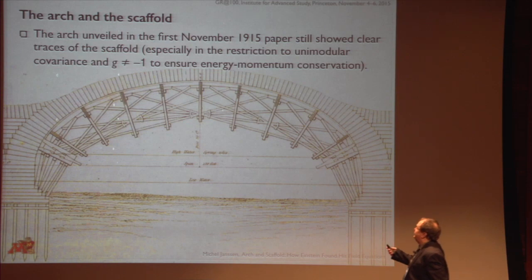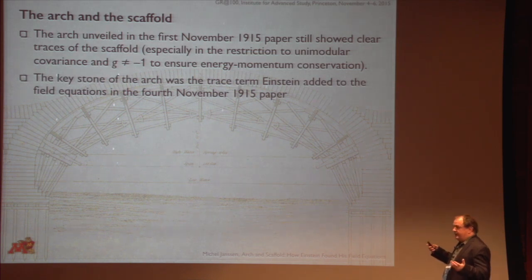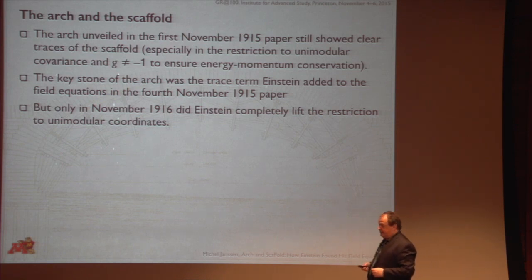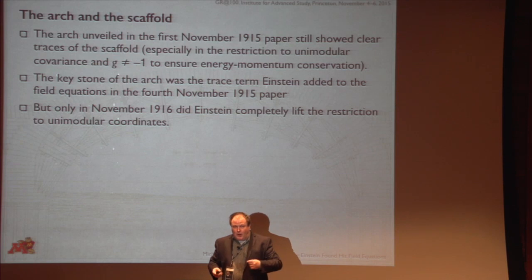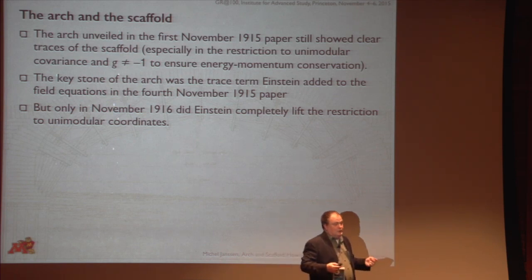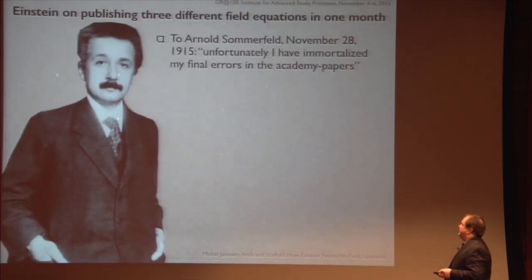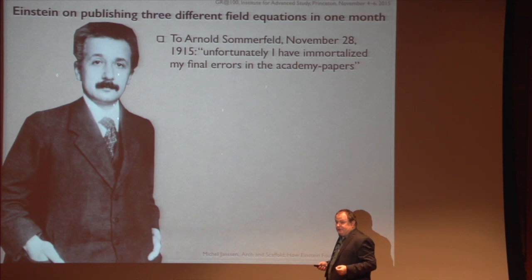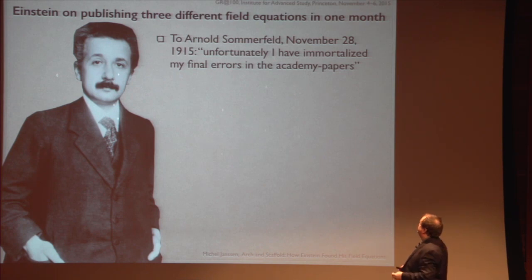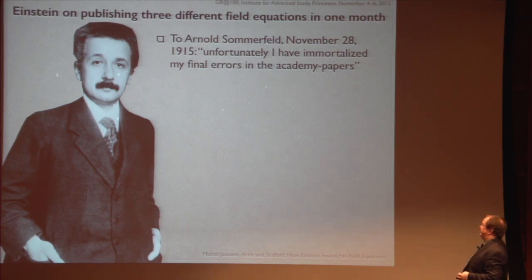Now, the arch as unveiled in that first November paper still has clear traces of the scaffold — it's missing the keystone, namely that trace term. And it's only in November 1916 that Einstein finally bothers to write down how all of this works in general coordinates; even in the review article of March 1916 that everybody reads, everything is still done in unimodular coordinates just for convenience. There's also the embarrassing fact that Einstein had to come to his colleagues three times in four weeks with new field equations. So he writes to Sommerfeld, with his self-deprecating sense of humor: 'Unfortunately, I've immortalized my final errors in the academy papers.' And he writes to Ehrenfest: 'It's convenient with that fellow Einstein — every year he retracts what he wrote the year before.' In this case, it's closer to every week.